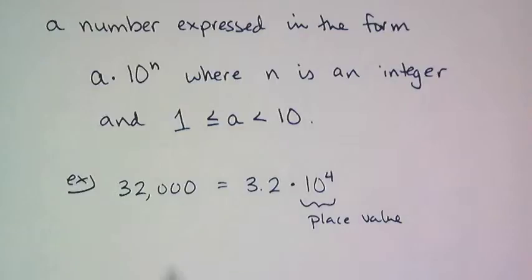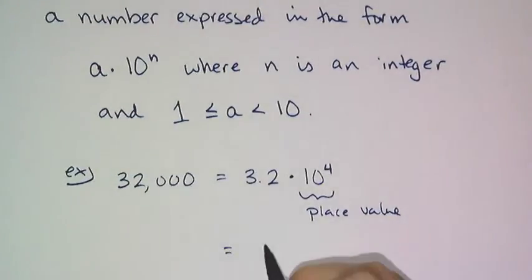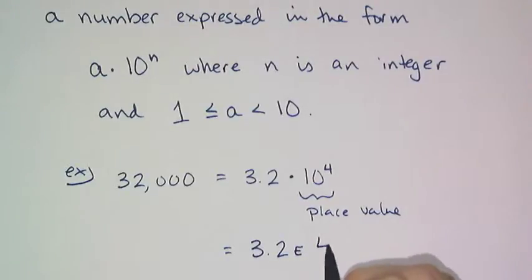Now on your calculator, if you get something in scientific notation, it doesn't have the times 10 to the, it is a 3.2 with a little bitty e and then the exponent of 4.